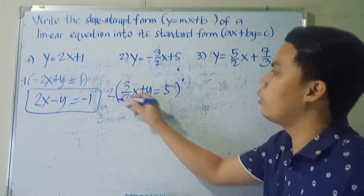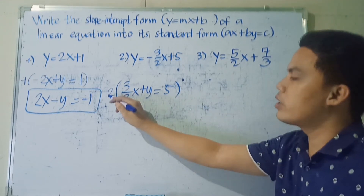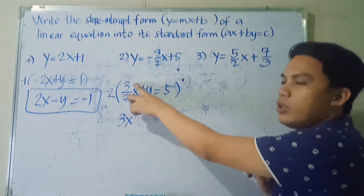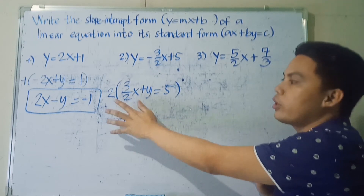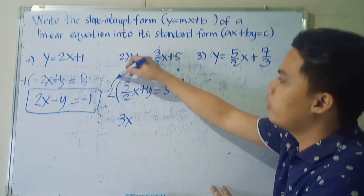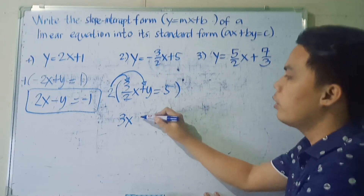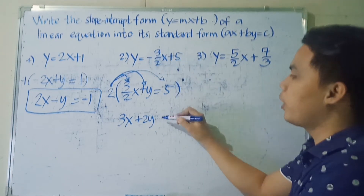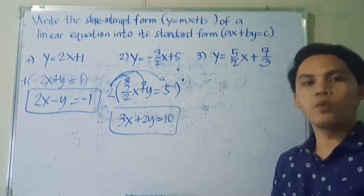To eliminate the fraction, we multiply the whole equation by the least common multiple of the denominators of each term. The denominator of 3/2 is 2, the denominator of Y is 1, and the denominator of 5 is 1, so the LCM is 2. Multiplying by 2: 2 times 3/2 X gives 3X; 2 times Y gives 2Y; 2 times 5 gives 10. So the final answer is 3X plus 2Y is equal to 10.